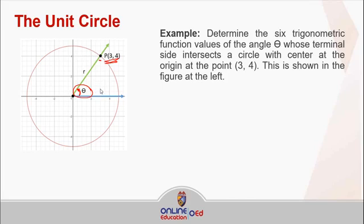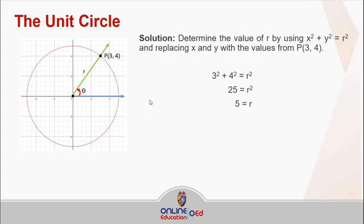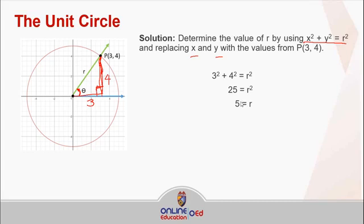How do we determine its function values? First, we determine the value of r by using the formula x² + y² = r², and replacing x and y with the values from the point (3, 4). The reason we can do that is because if we connect a perpendicular down to the x-axis, it's like having a right triangle, which of course follows the Pythagorean theorem. This leg has a length of 3 and this leg has a length of 4. So that's where we get 3² + 4² = r², giving us 25 = r², or r equals 5. Therefore, the radius of the circle is 5.